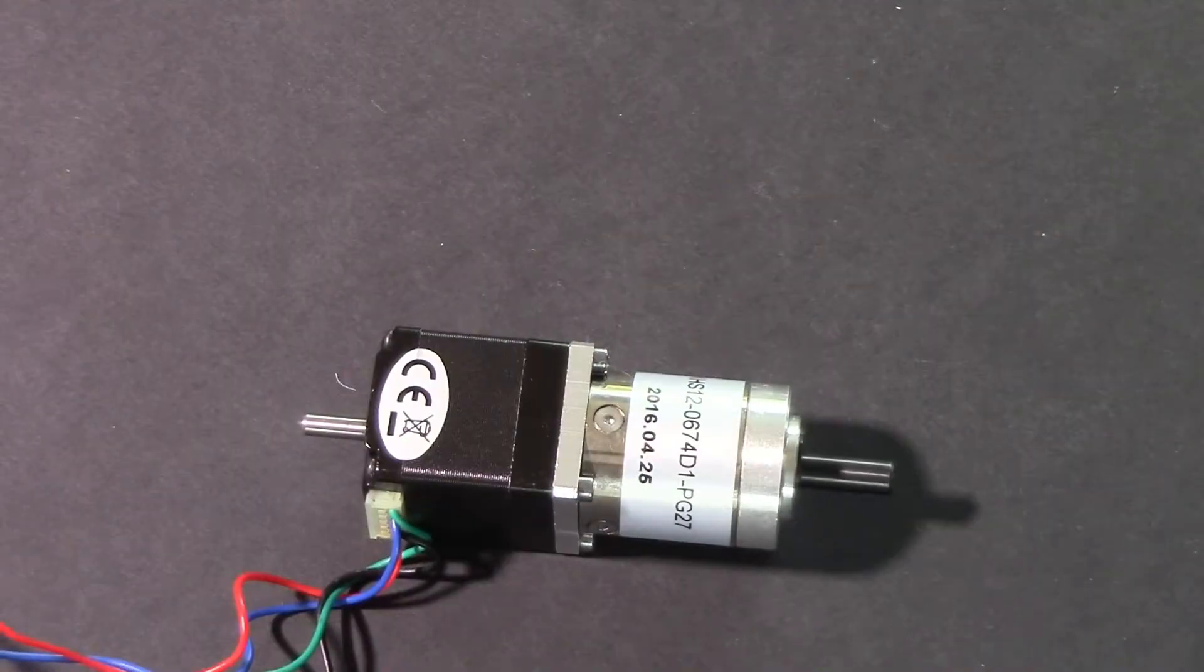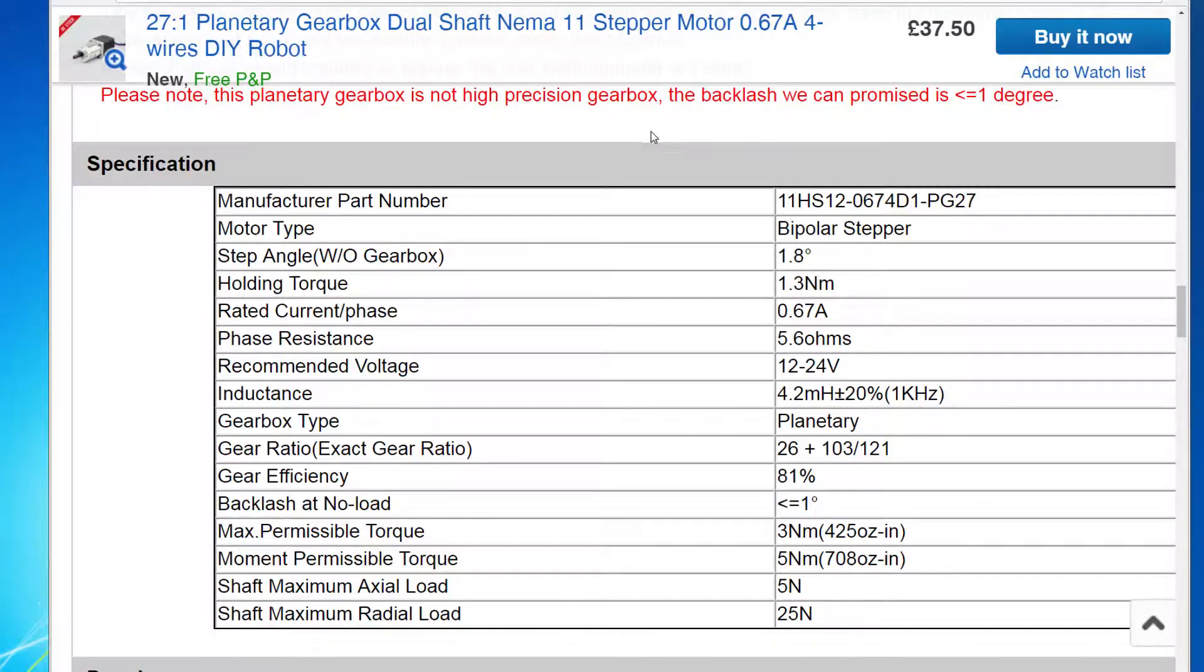But of course, as always in life, you get what you pay for. This unit costs 38 quid, the JGY370 only cost about eight pounds, although the vendor gives a warning here to say that they can't guarantee that the backlash will be any less than 1 degree.